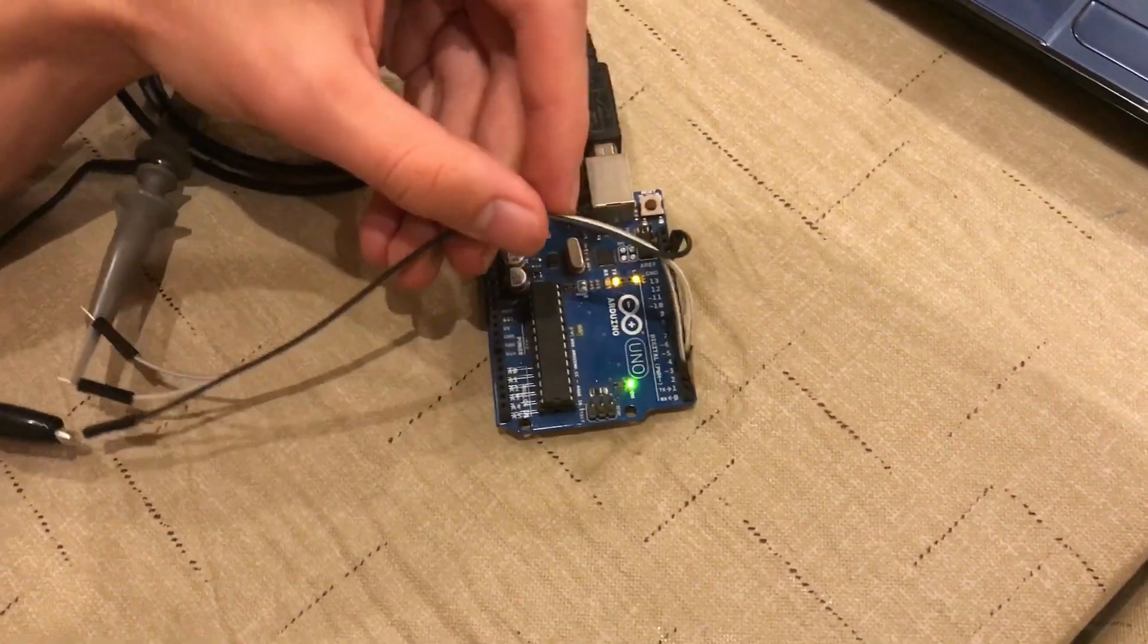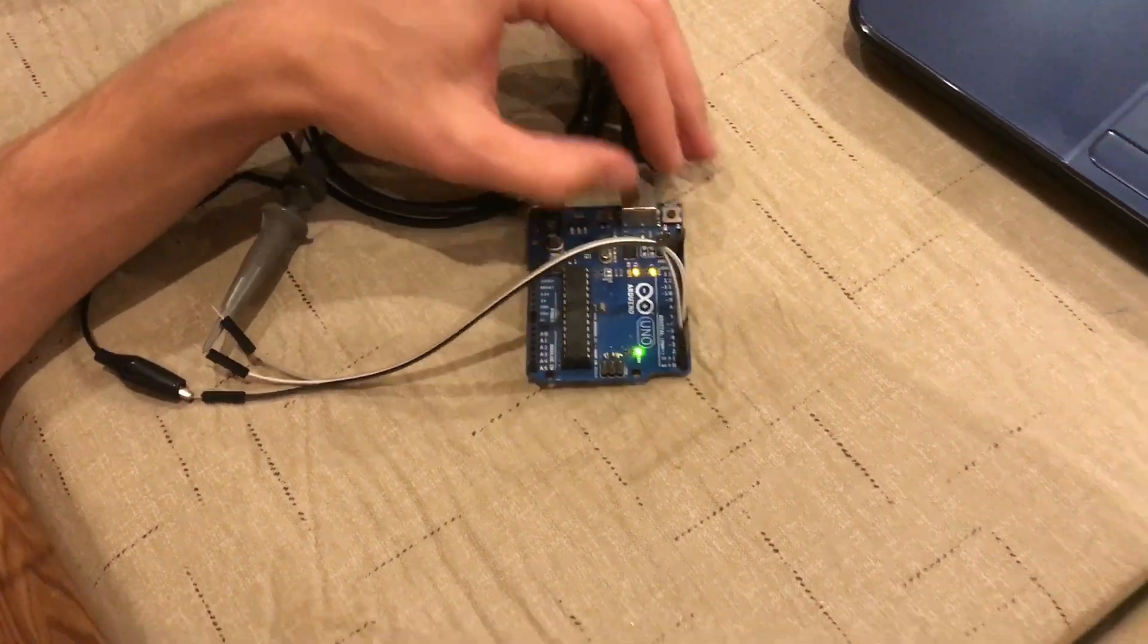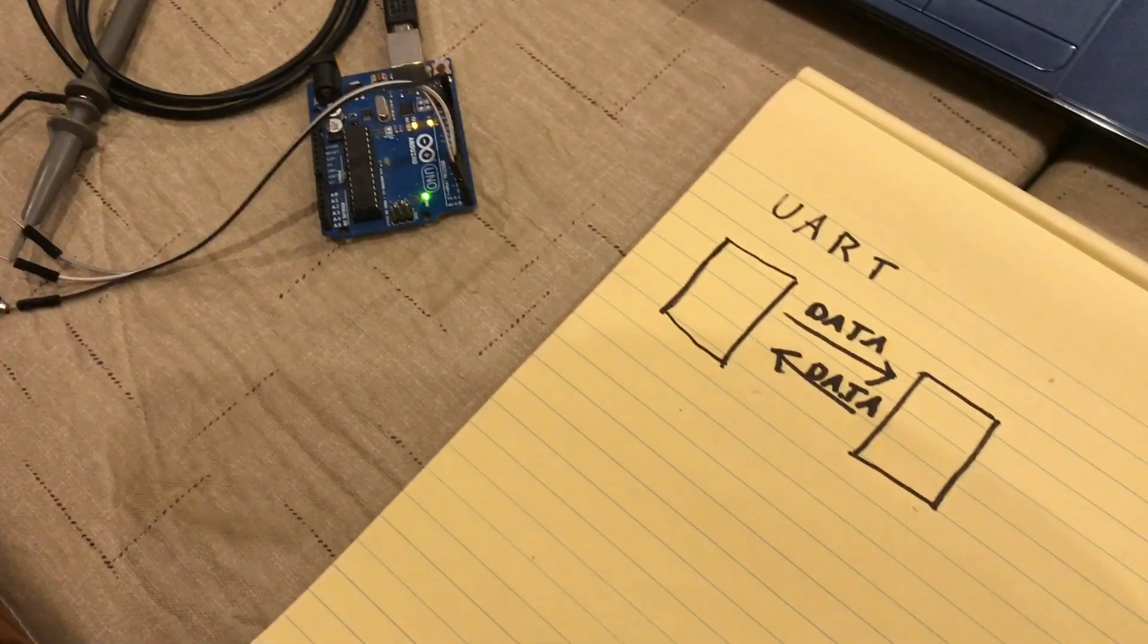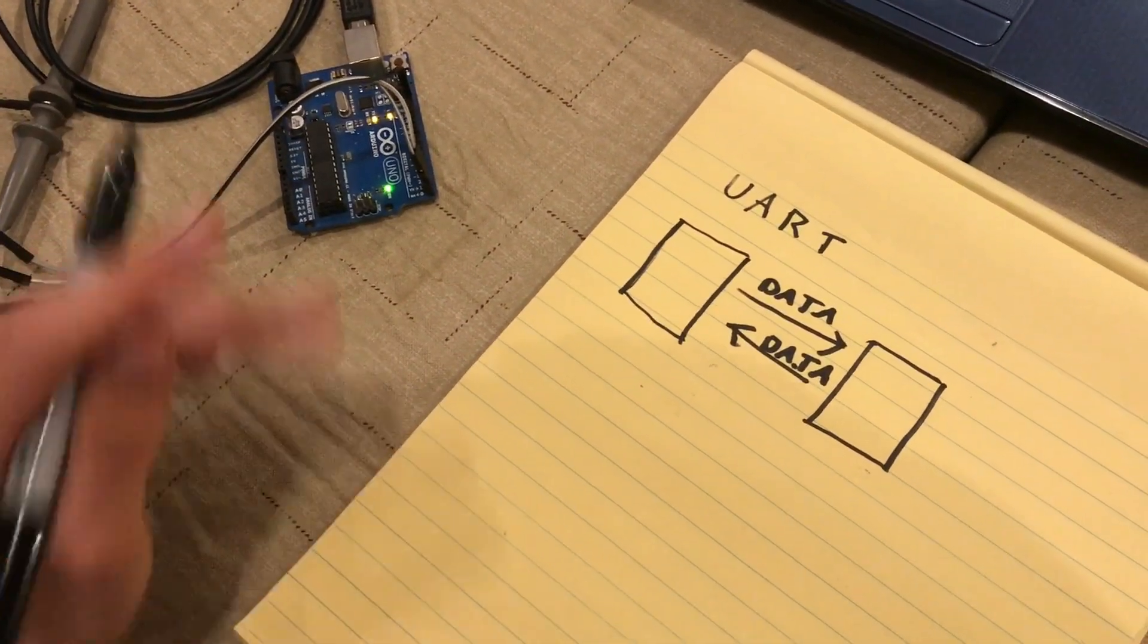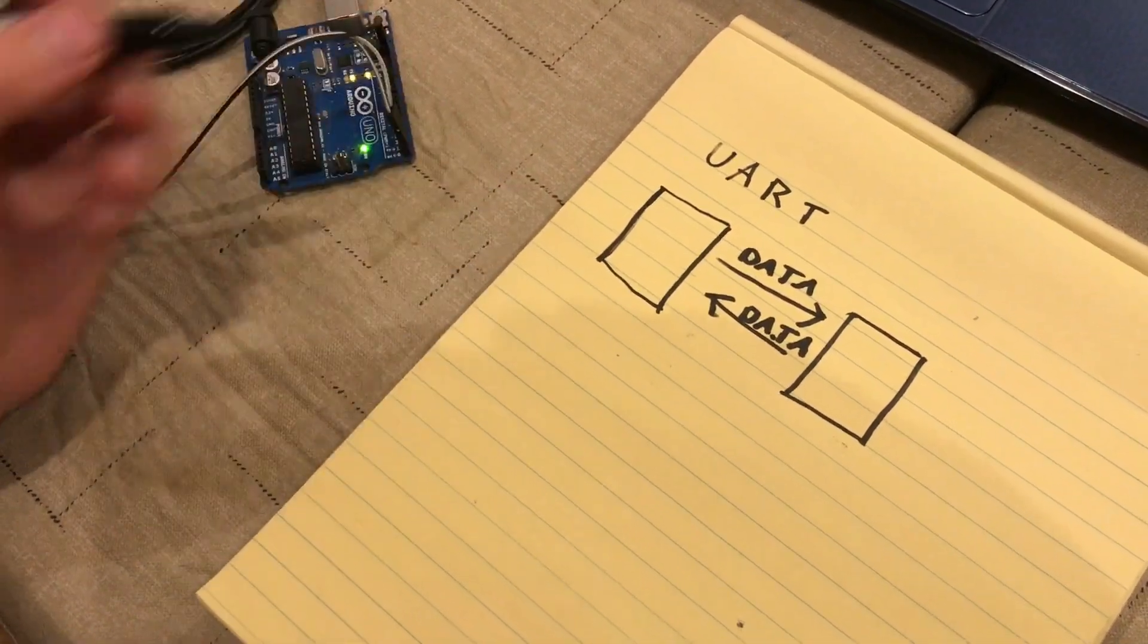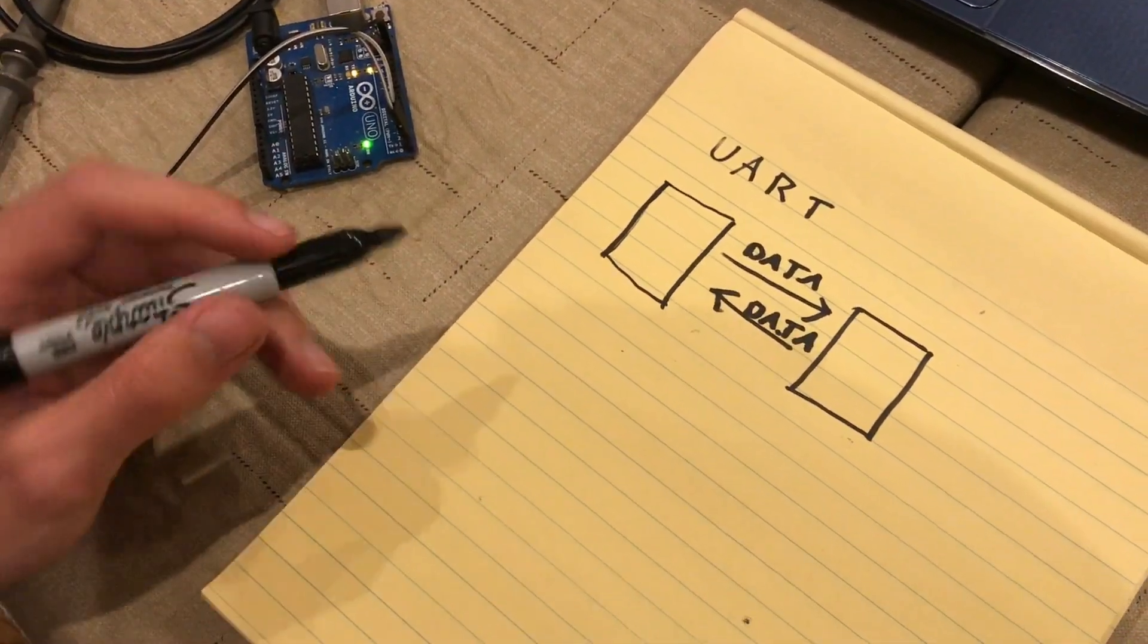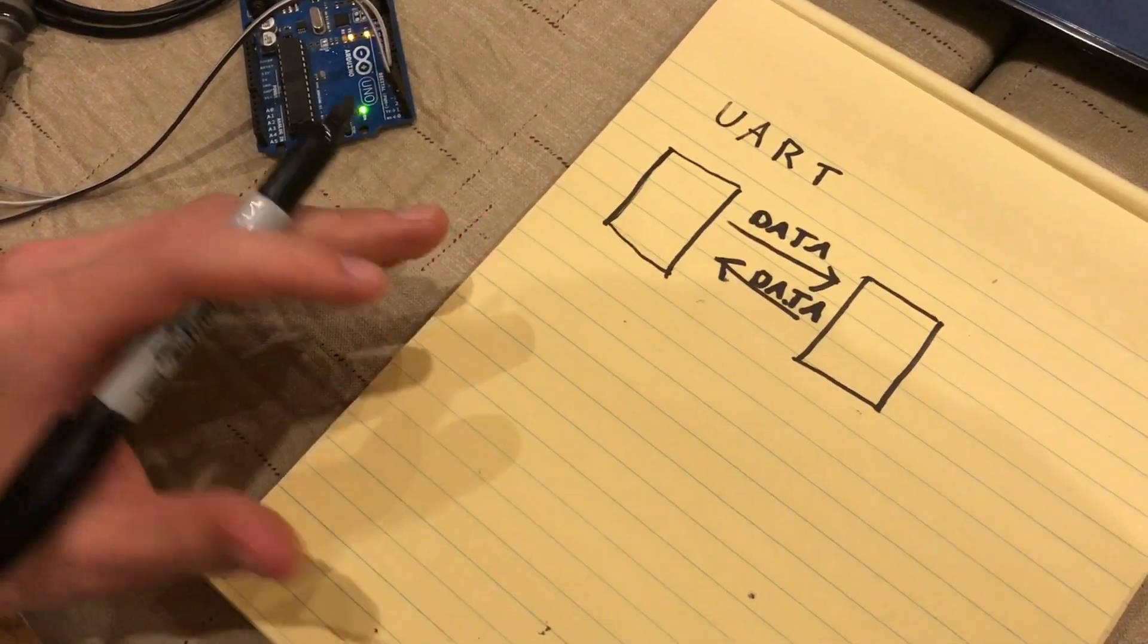There's three wires coming off of the Arduino Uno. The one wire that you pretty much always have in any type of communication is the ground wire. This is just there for keeping both devices at the same reference voltage.